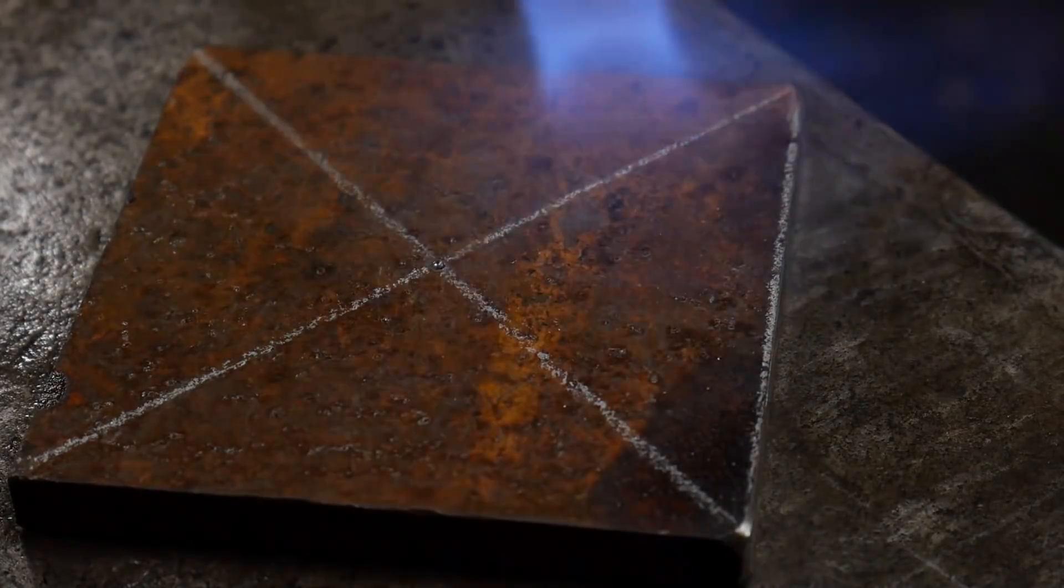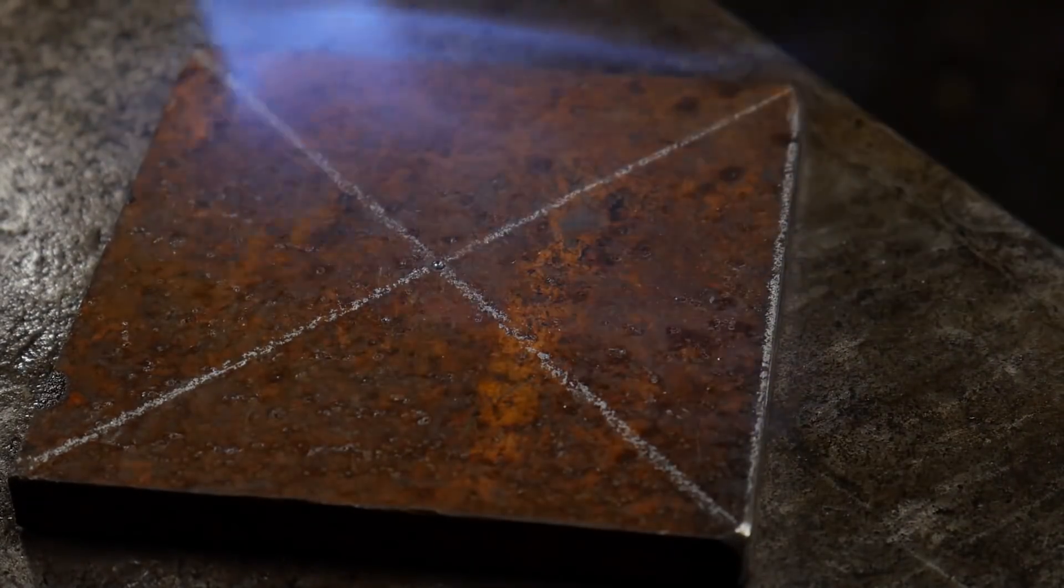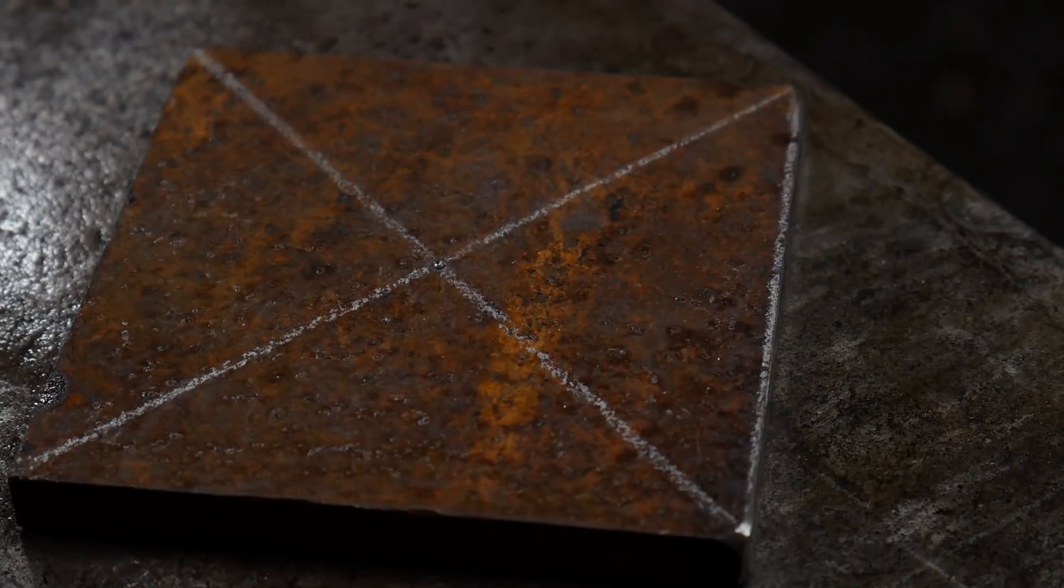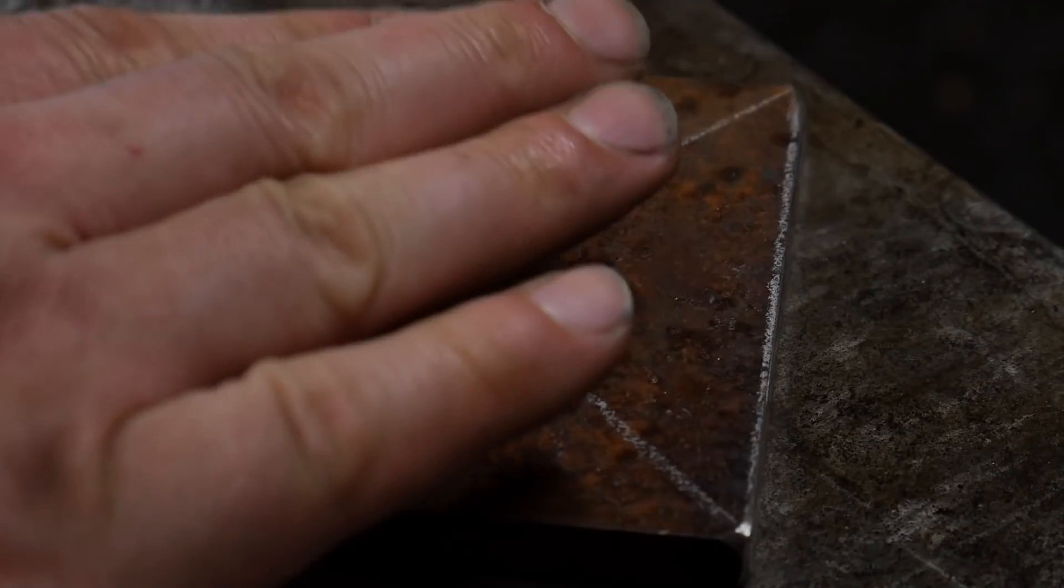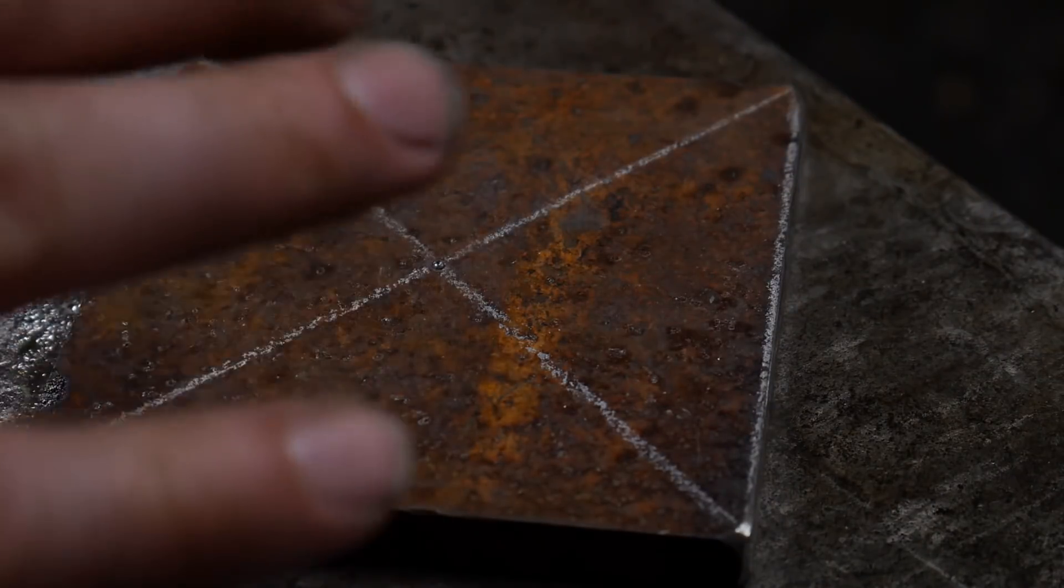That moisture in that material will get under your paint and you can see the anvil sweating right around here. That will allow the material to still rust.